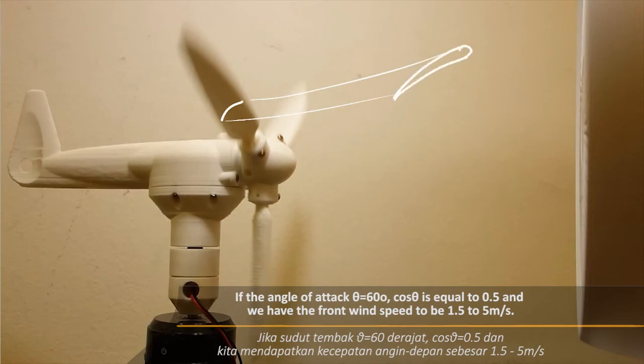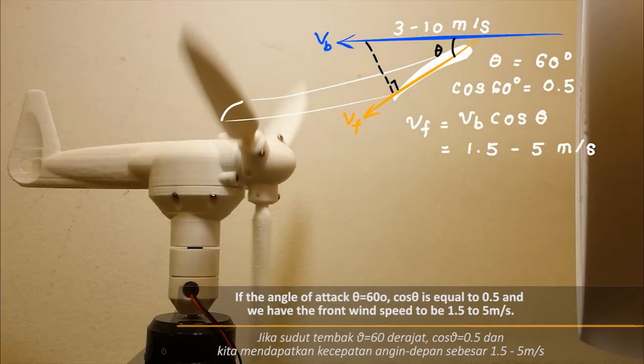If the angle of attack theta is equal to 60 degrees, cos theta is equal to 0.5 and we have the front wind speed to be 1.5 to 5 meters per second.